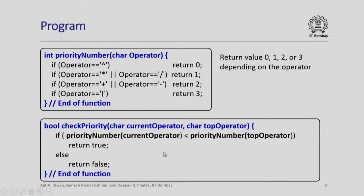Next, let us look at assignment of priority numbers, which indicate the priority of various operators. This will return value 0, 1, 2, or 3 depending upon the operator. For every operator character: if it is raise-to it returns 0; if it is star or slash it returns 1; if it is plus or minus it returns 2; and if the operator is an opening parenthesis it returns 3.